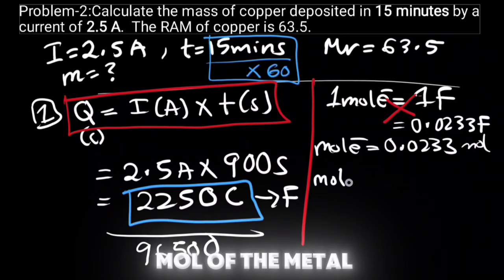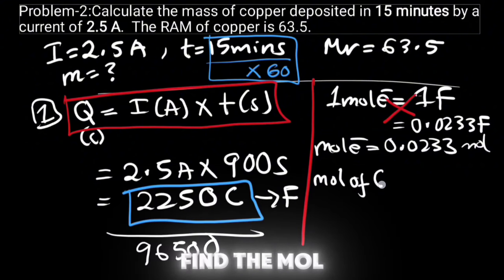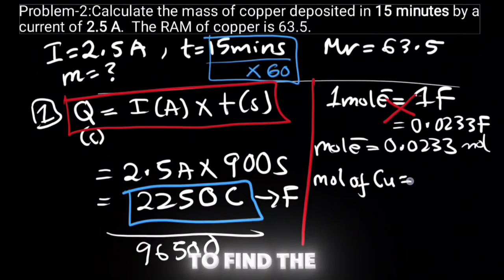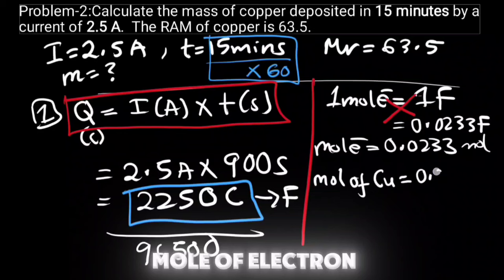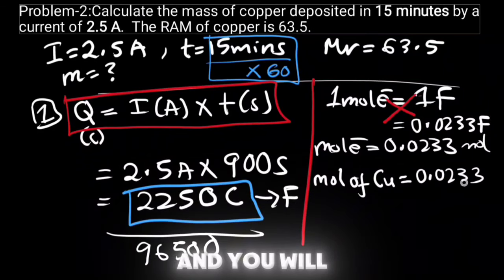In the next step, you have to find the mole of the metal. Now in this case we have copper, so we will find the mole of copper. To find the mole of copper, you'll take the mole of electron and you will divide it by the number of electrons the copper will lose or gain.